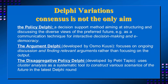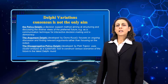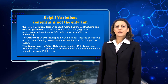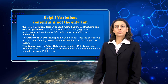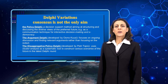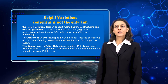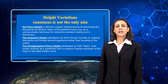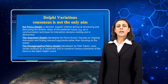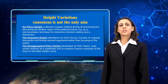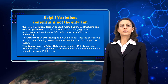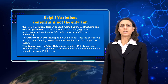The last variation is called the Disaggregative Policy Delphi, developed by Petri Tapio. The purpose is not to reach consensus, but to create different scenarios and plans about what the future is going to be. The technique uses cluster analysis in order to group the opinions of different experts into different scenarios and plans.